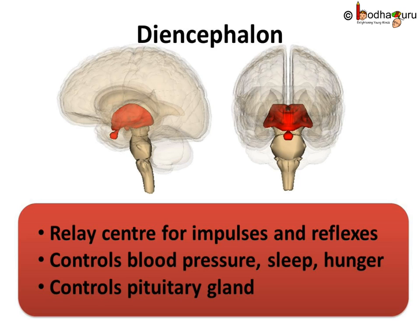Diencephalon controls certain emotions like anger. It also controls blood pressure, body temperature, sleep and hunger. The hypothalamus controls the pituitary gland, which is the most important hormone gland in our body. So, Diencephalon is critical for our survival.